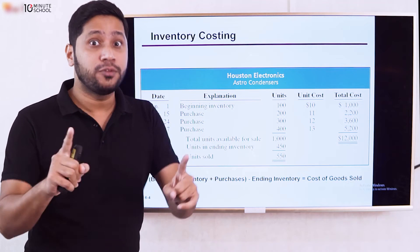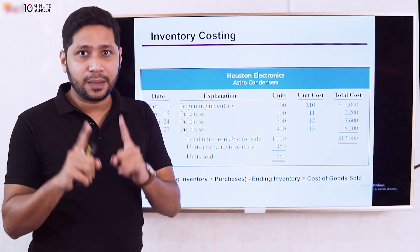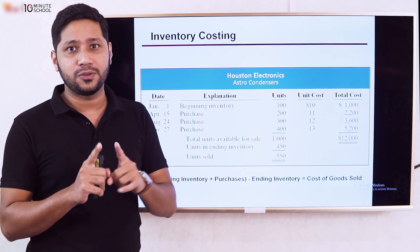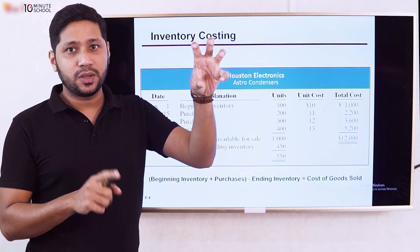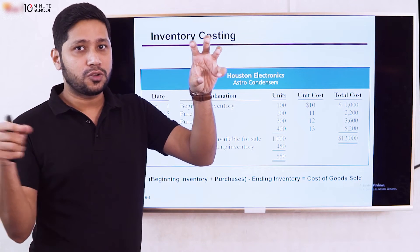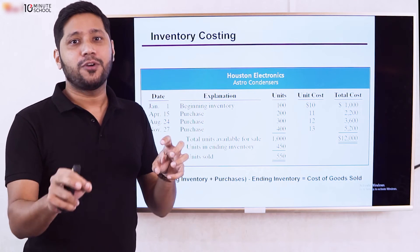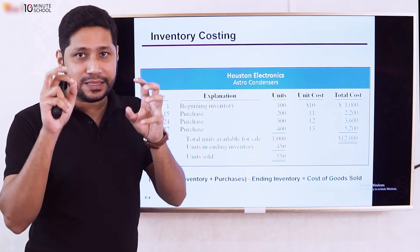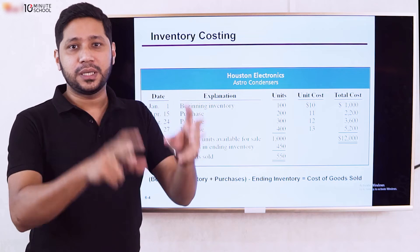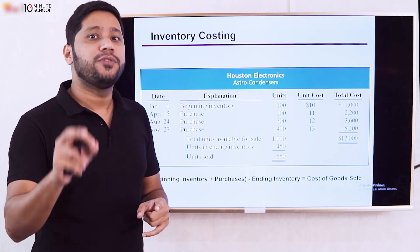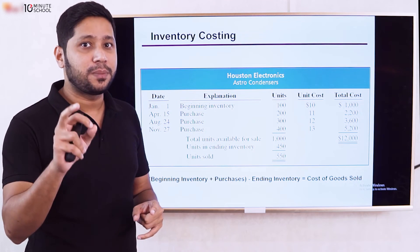Since the value of cost of goods sold is different depending on whether we use FIFO or LIFO, the gross profit will also be different. Gross profit equals sales revenue minus cost of goods sold.